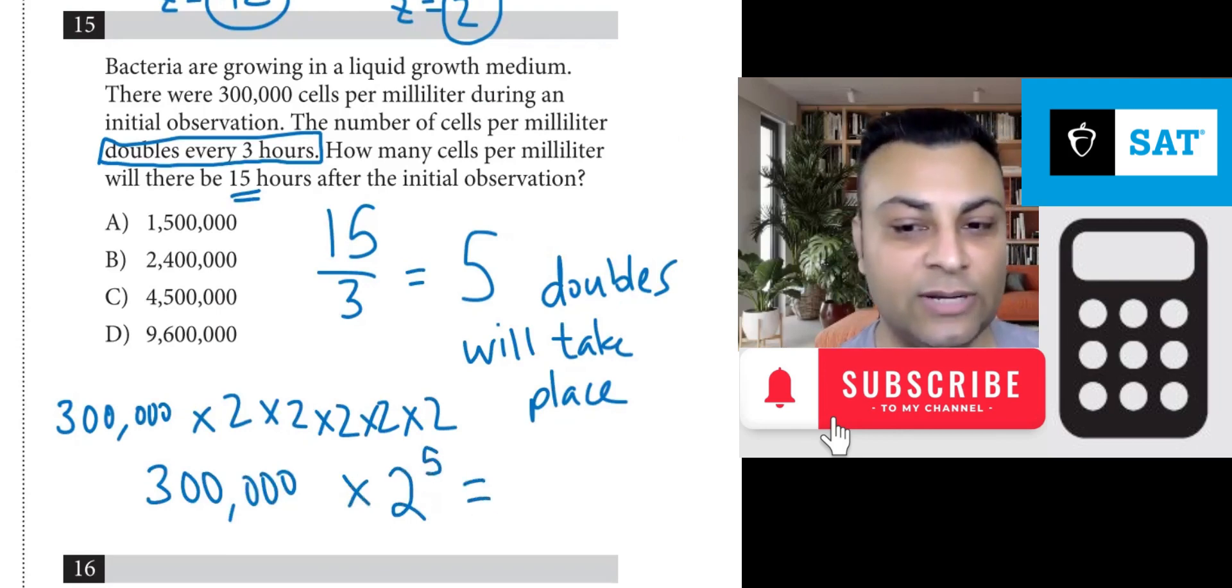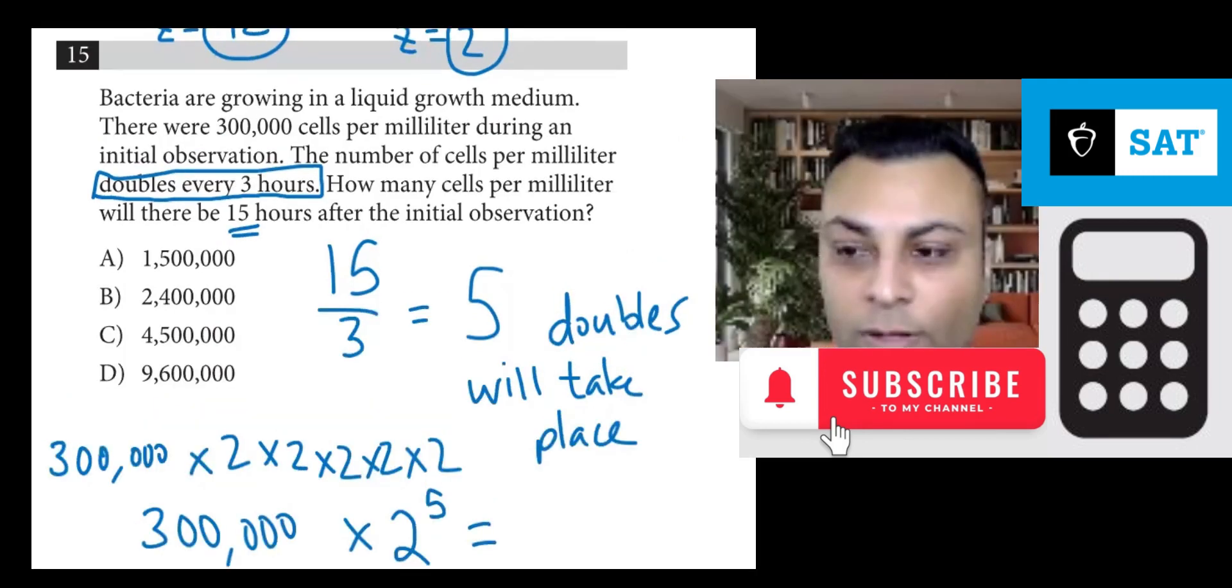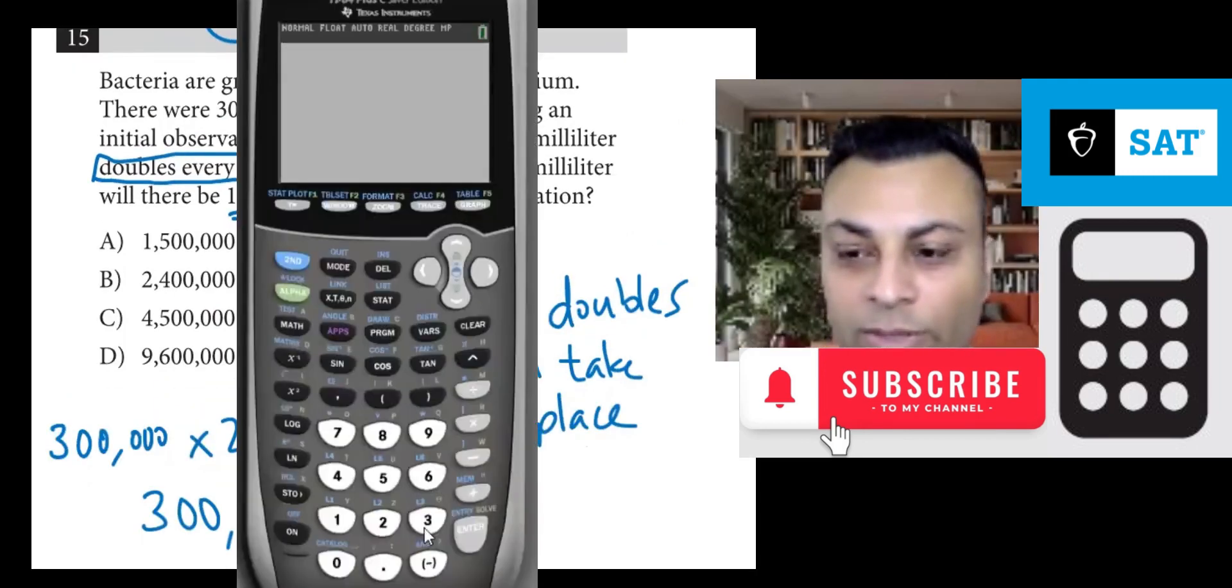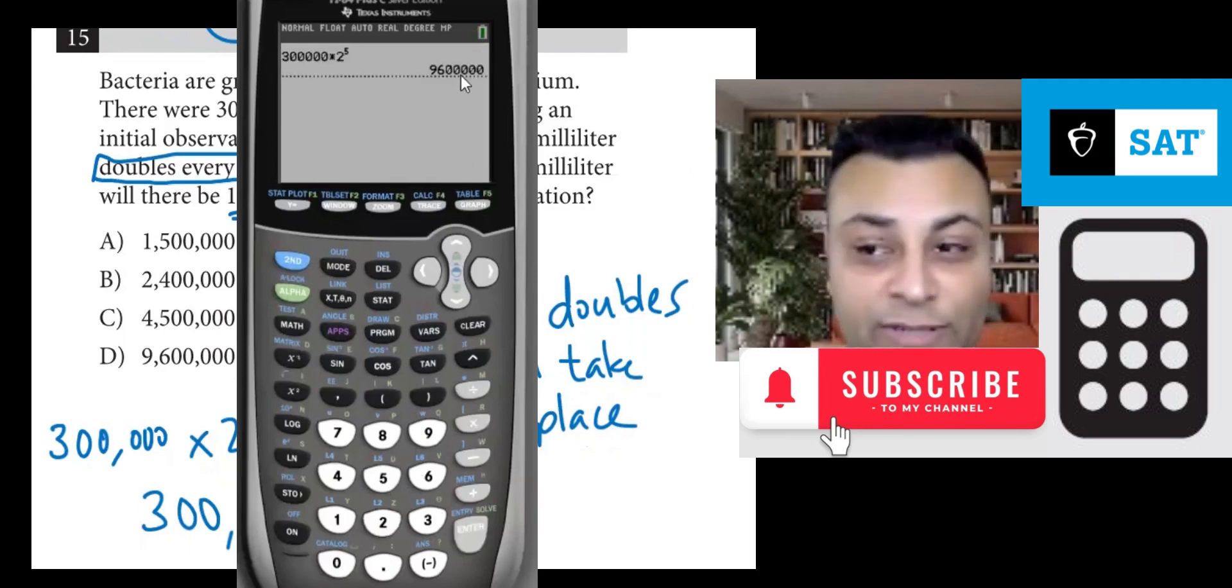And for that, we can get the calculator out. Here we go. 300,000 times 2 to the 5th. And you get this number, which is 9.6 million. So the answer is option D.